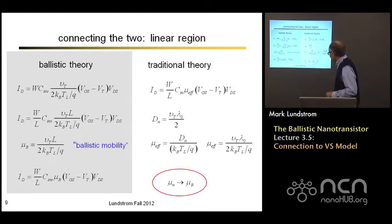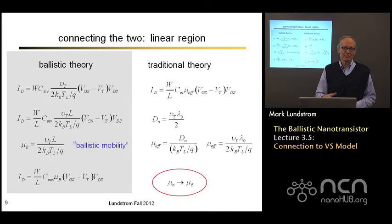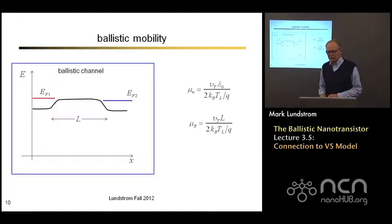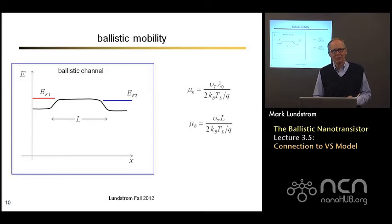We can relate our ballistic MOSFET model to our traditional MOSFET model simply by replacing the real mobility by the ballistic mobility. Then the expressions look the same. So what exactly is this ballistic mobility? It's a concept that some people might say makes no sense at all. How can there be a mobility in the ballistic case when there is no scattering? But it's a concept that is actually quite useful to us and we can attach some physical significance to it.